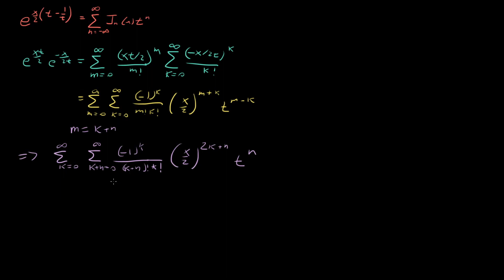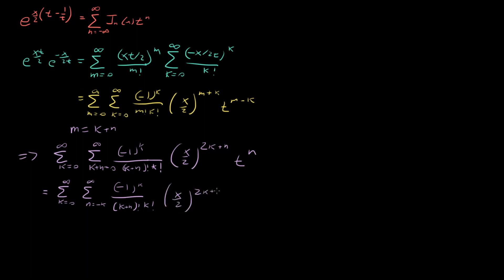Just note that the index written as k plus n equals 0 can also be written in a more familiar way: sum over k from 0 to infinity, sum over n from minus k to infinity, of (minus 1)^k over (k+n) factorial k factorial, times (x/2)^(2k+n), times t^n. So k plus n equals 0 is the same as n equals minus k, going up to infinity.